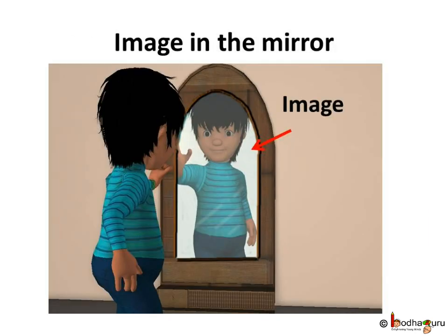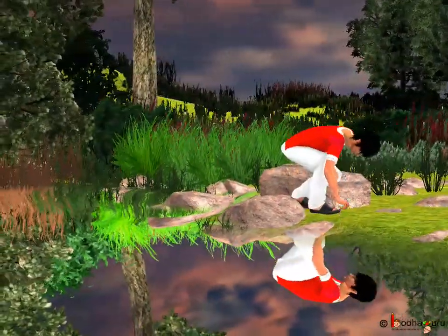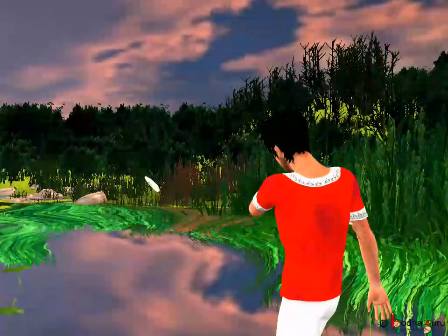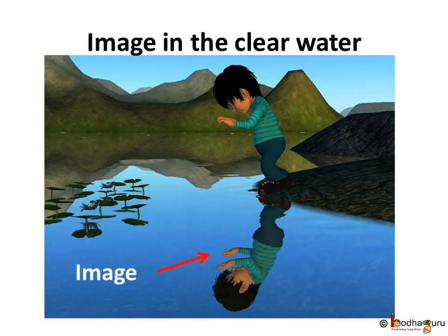We all use a mirror to look at our face. The face seen in the mirror is called an image. Not just mirrors — sometimes we can see our image in clear water or on a shiny steel plate too. So, if the surface of any object, be it transparent or opaque, is plain and smooth, images are formed. Any polished or shiny surface can act as a mirror.